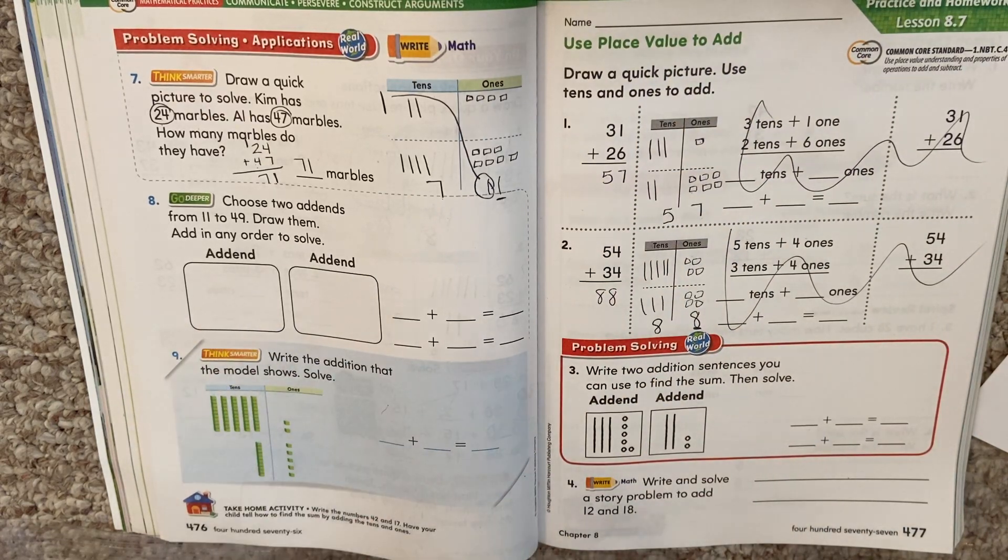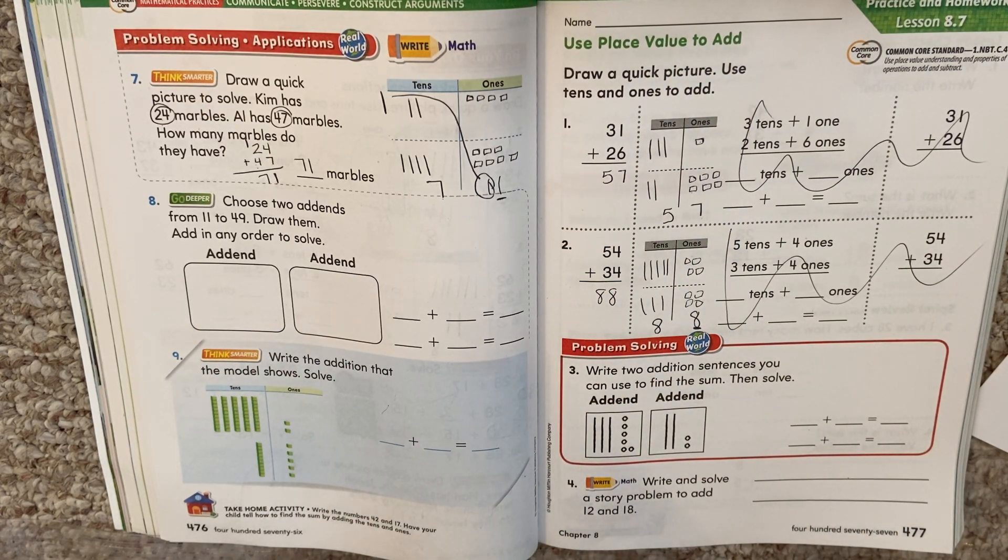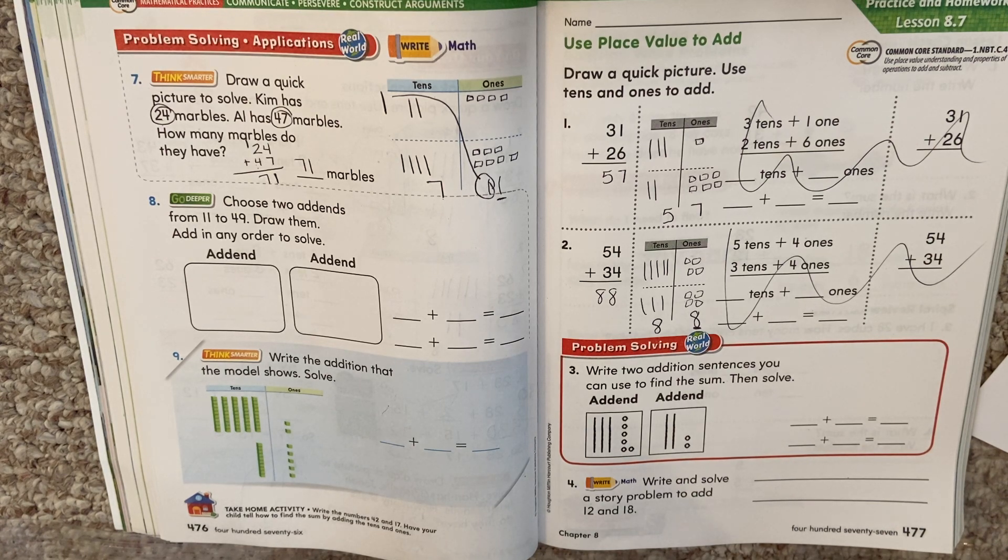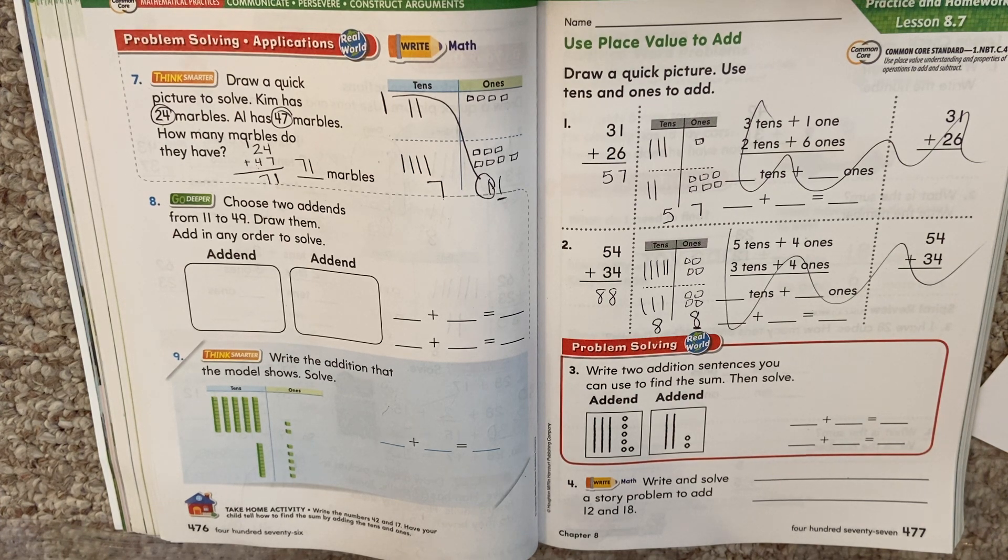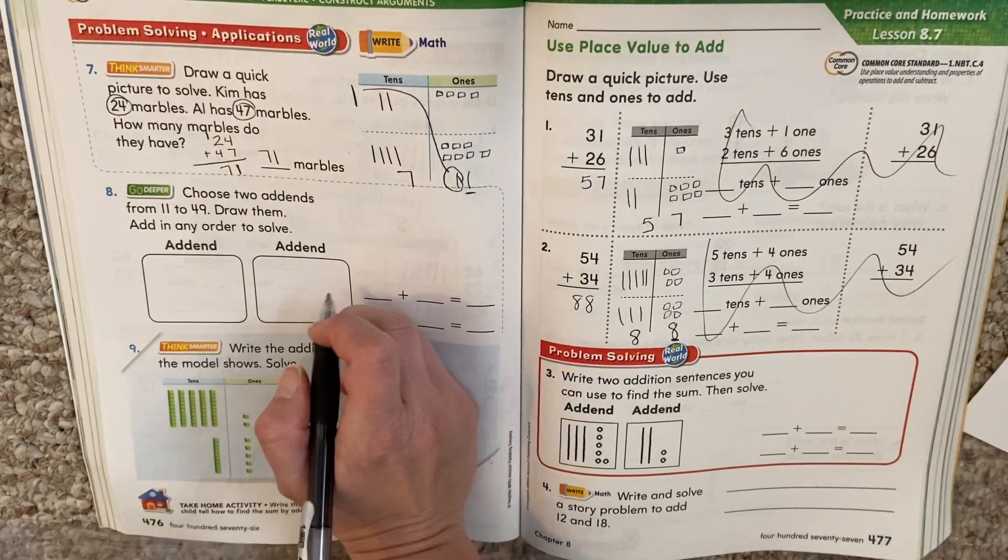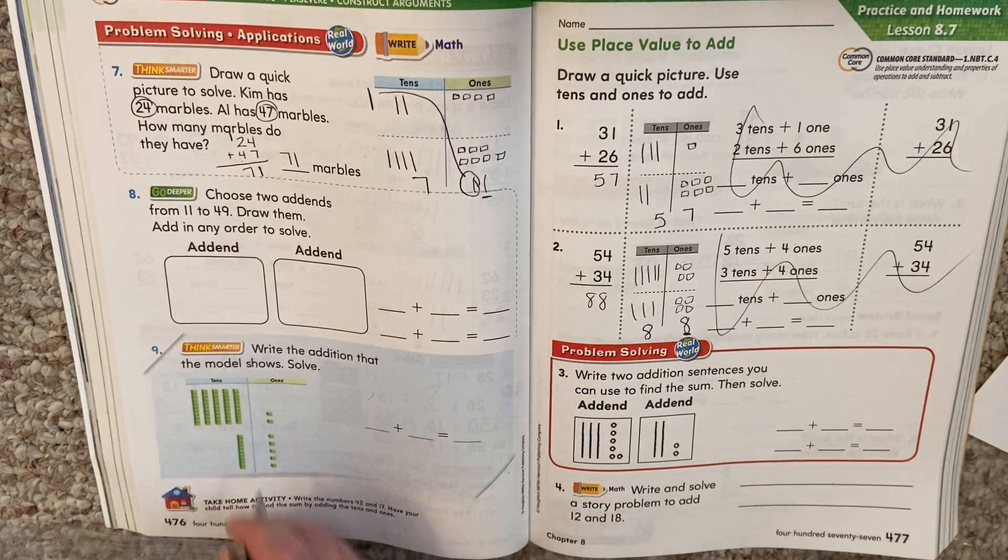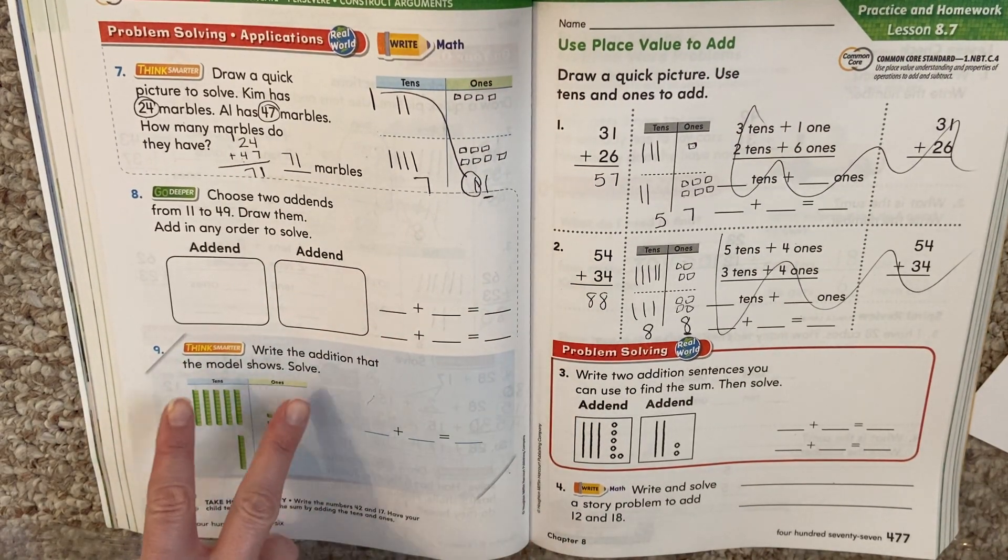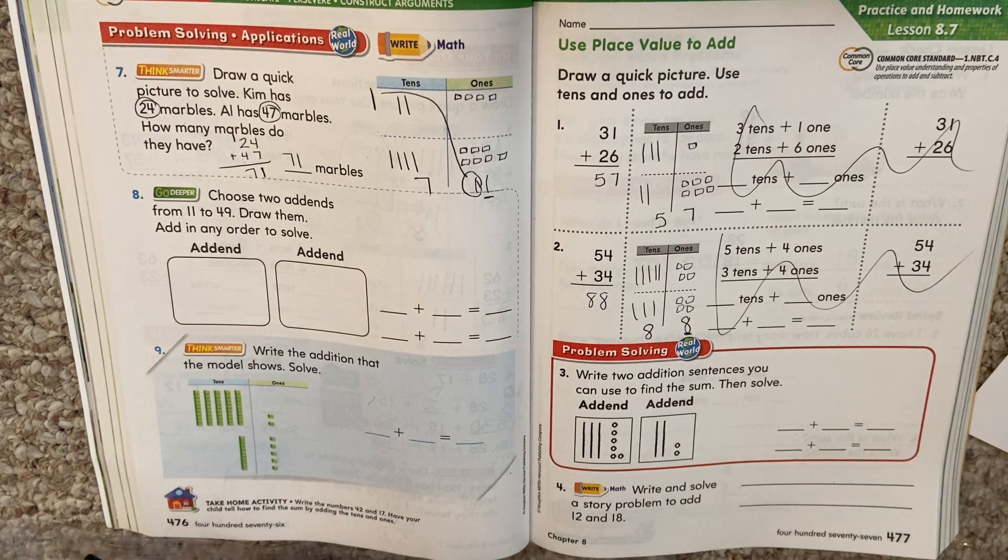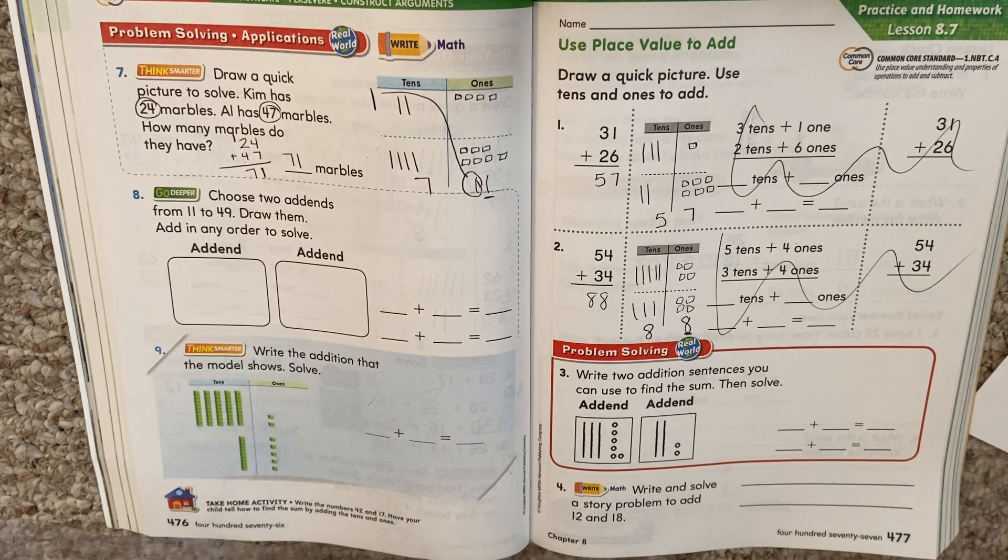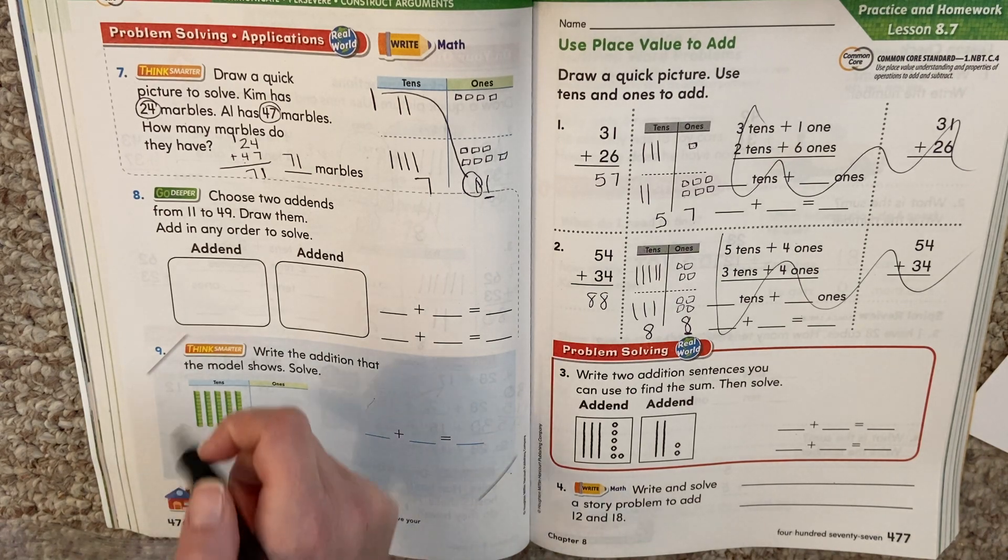Now, we're going to take a look at this one. It says, choose two addends from eleven to forty-nine. Draw them. Add them. Add in any order to solve. So when it says two addends from eleven to forty-nine. So I'm going to pick two numbers. We're going to draw them and we're going to work on solving it. So let's go with thirty-two and forty-five.